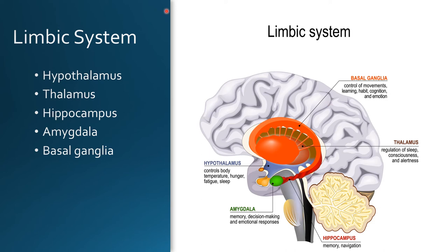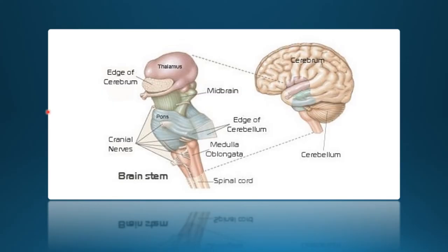The brain stem is made up of cells that produce neurotransmitters. It includes the midbrain, the pons, the medulla, the cerebellum, and the reticular formation. This region is important to visualize because it's sometimes hard to picture where the brain stem is located in relation to the thalamus and the medulla.